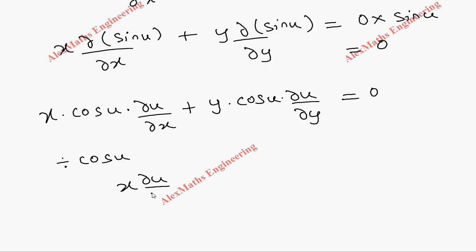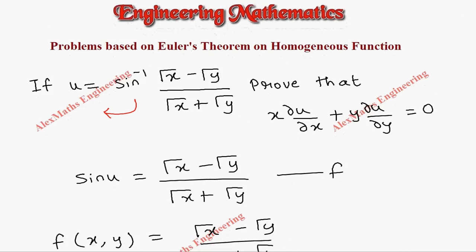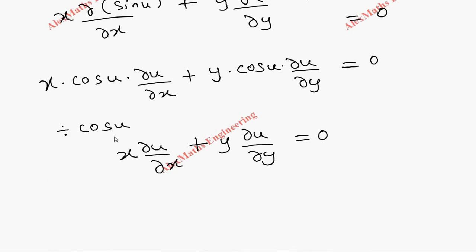So x into del u by del x plus y into del u by del y equal to 0. So the term which we have to prove, x into del u by del x plus y into del u by del y equal to 0, we got it using Euler's theorem.